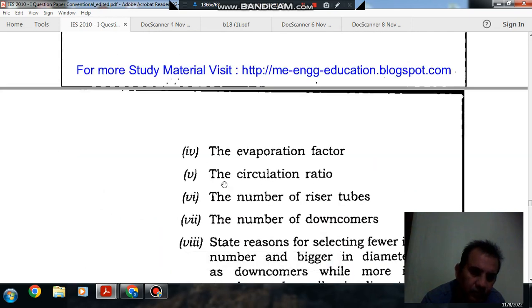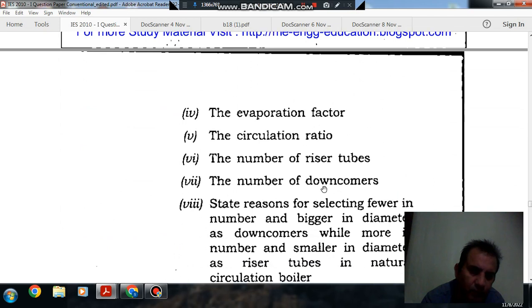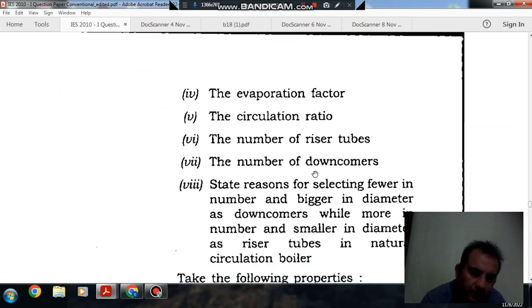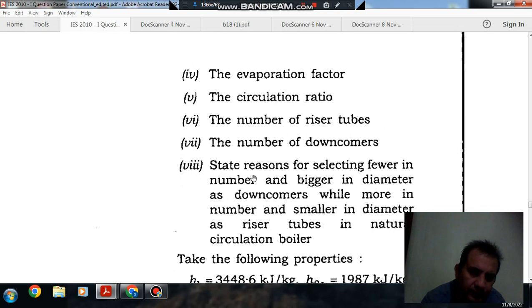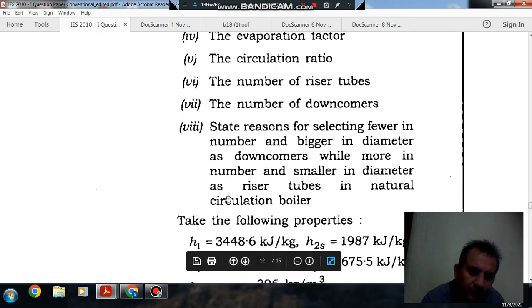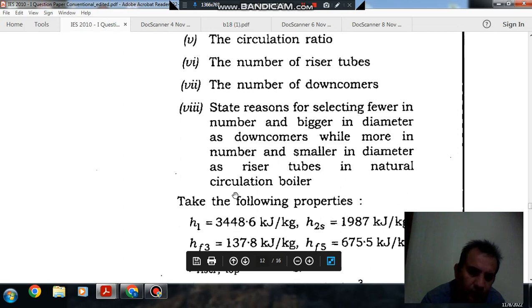5. The circulation ratio. 6. The number of riser tubes. 7. The number of downcomers. 8. State reasons for selecting fewer in number and bigger in diameter as downcomers, while more in number and smaller in diameter as riser tubes in natural circulation boiler.